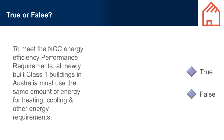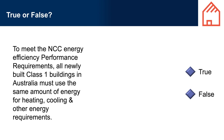True or false: To meet the NCC energy efficiency performance requirements, all newly built Class 1 buildings in Australia must use the same amount of energy for heating, cooling, and other energy requirements. The answer is false.